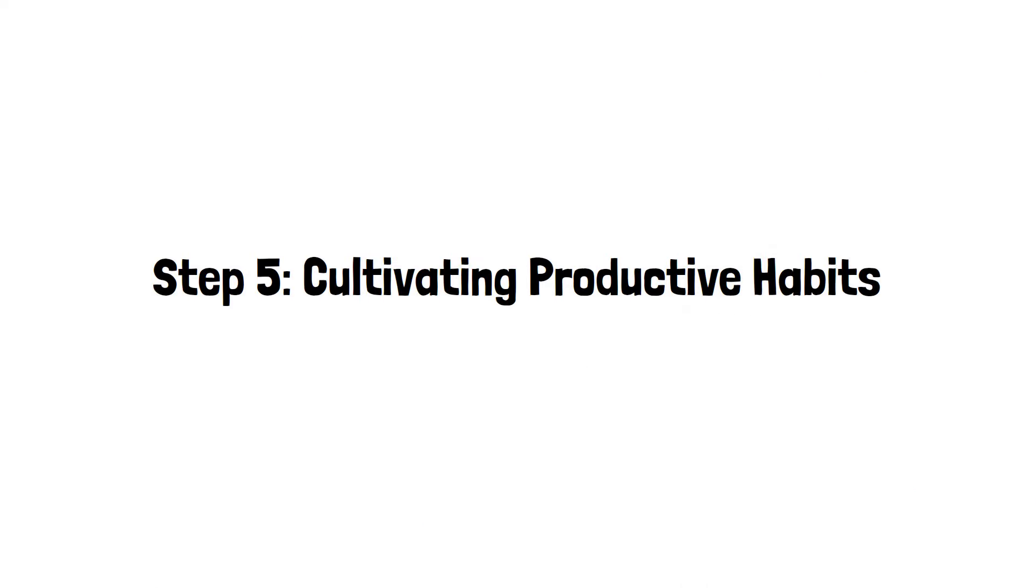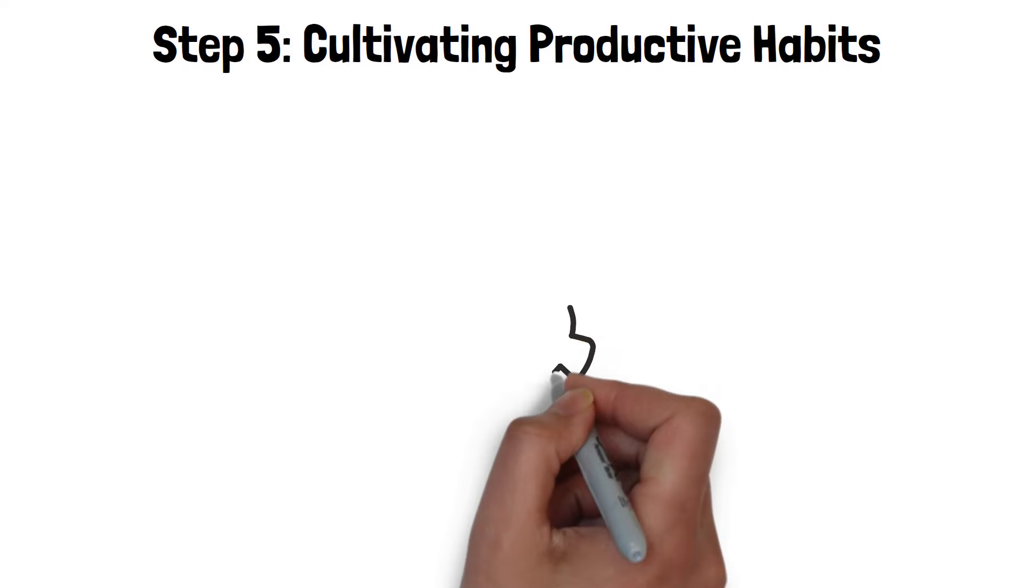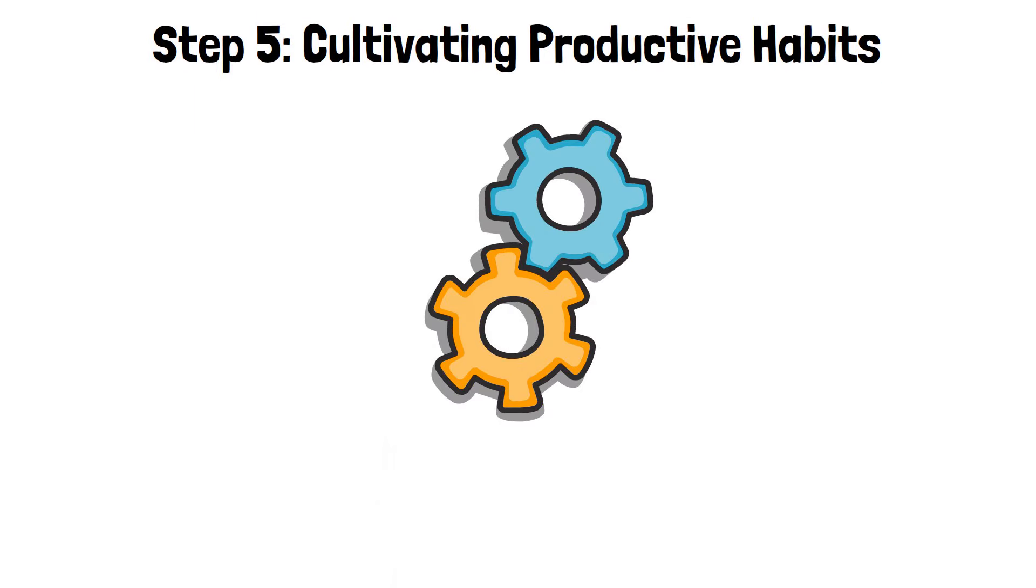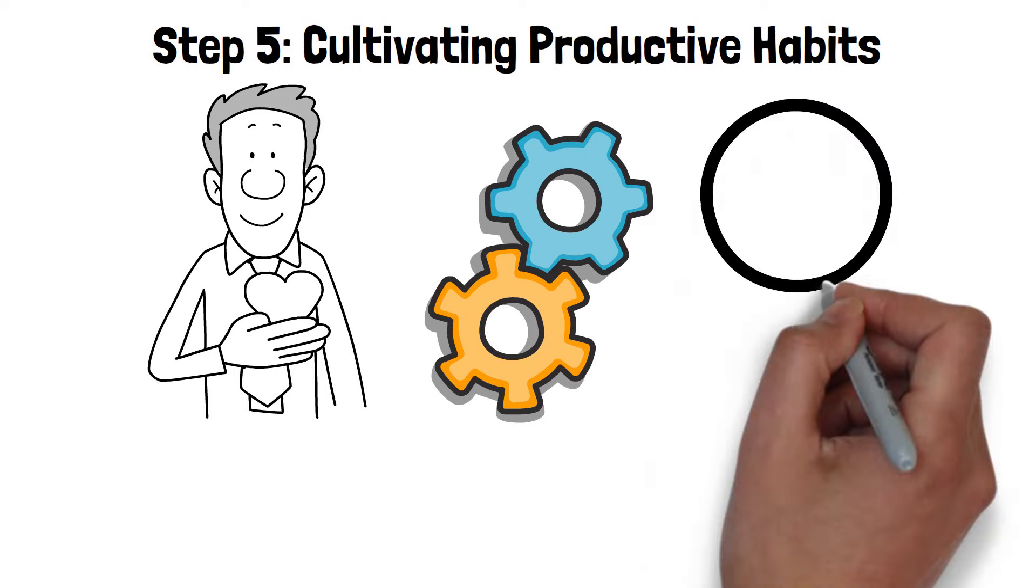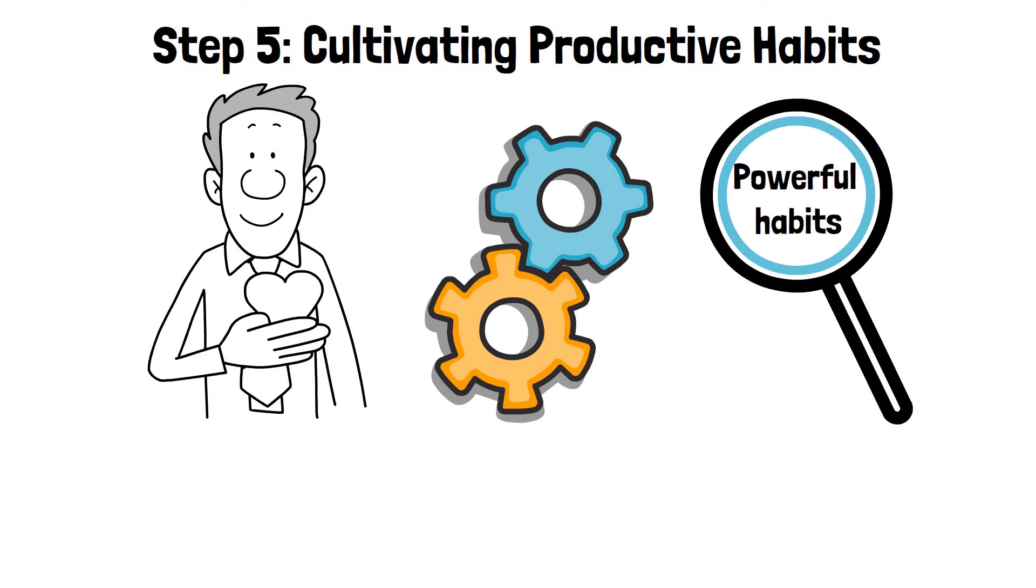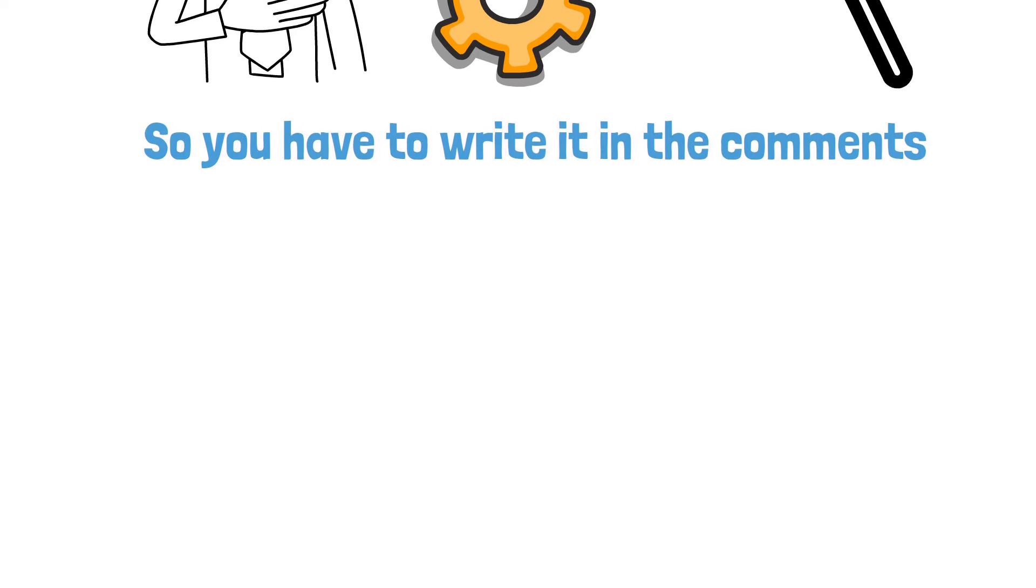Step 5. Cultivating Productive Habits. Productivity isn't just about getting things done. It's about optimizing our routines and behaviors to maximize our efficiency and well-being. Let's explore some powerful habits. Too late, you heard the word habits for the second time, so you have to write it in the comments. Some powerful habits that can supercharge your productivity.